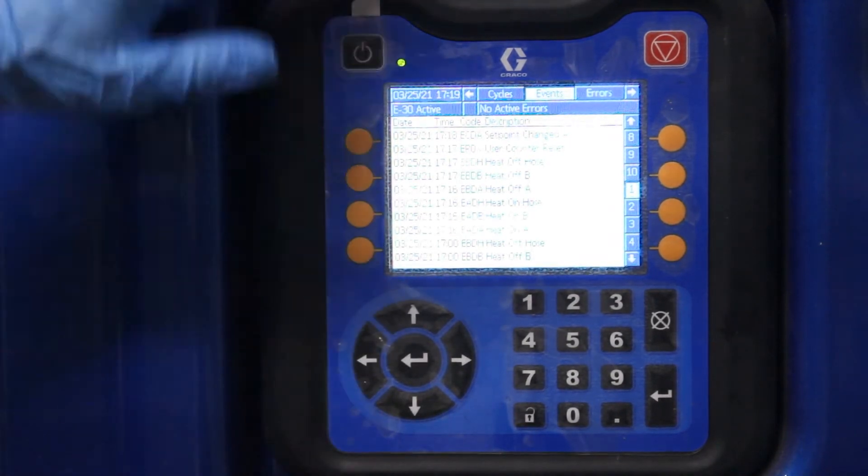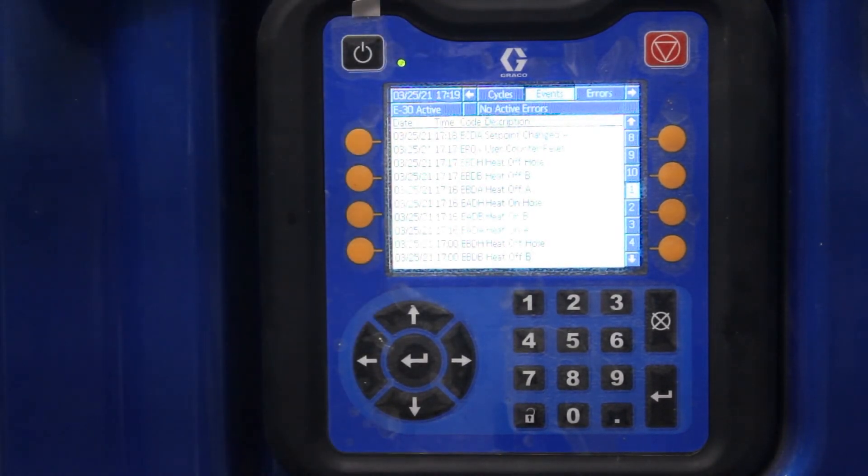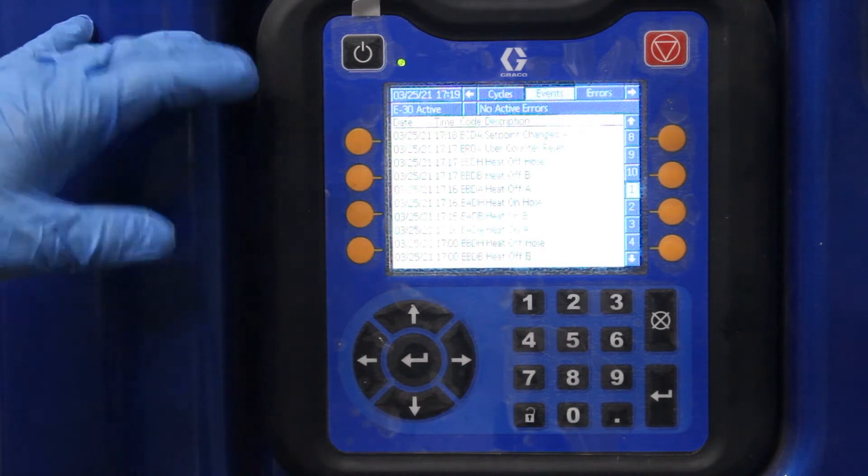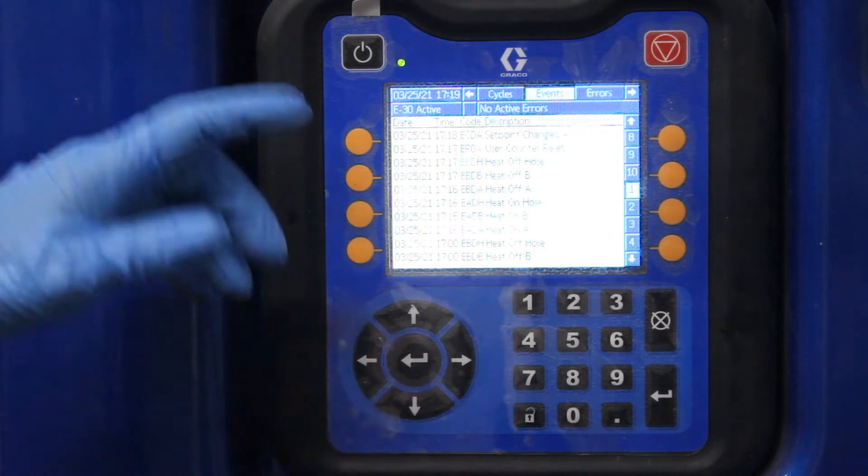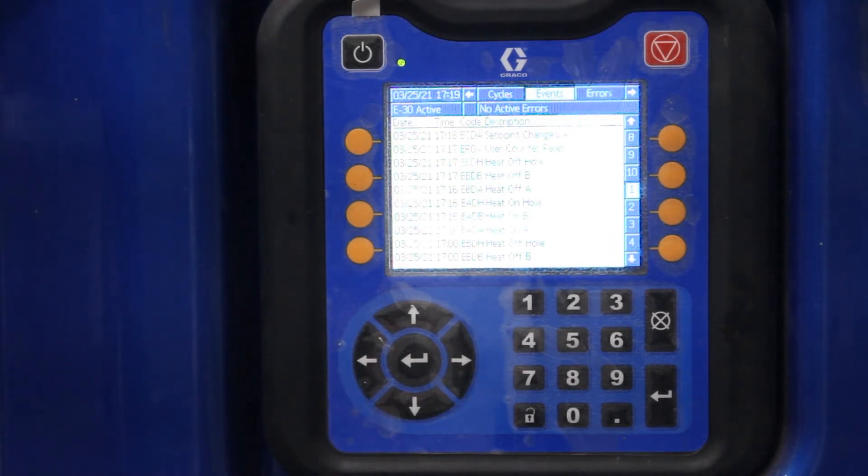Then this page right here says events. Anytime I turn the heater on or off, it came on. Counter reset, heat off, hose, heat off, hose. That's telling me what I did.